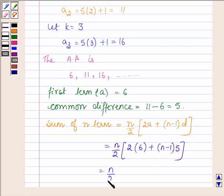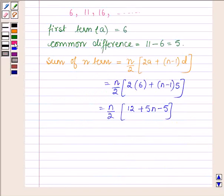This is further equal to n upon 2, 12 plus 5n minus 5 which is equal to n upon 2, 5n plus 7.